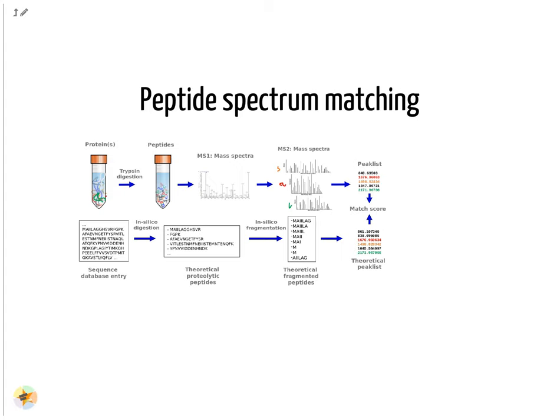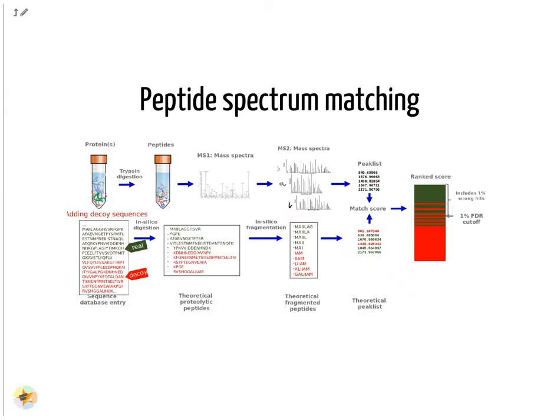These in silico generated mass values are matched to the mass values from each measured MS2 spectrum. A matching score allows finding the best identifications for each MS2 spectrum. Potentially false matches may occur, so the false positive rate is controlled. This is done by adding decoy sequences to the protein sequence database. These sequences are generated by reversing or shuffling the real sequences and will not exist in the sample. If such sequences are considered a good match to an MS2 spectrum, this is a false match. One option to control the number of false positive matches is via a false discovery rate cutoff that includes only the best matching scores with 1% wrong decoy matches included.